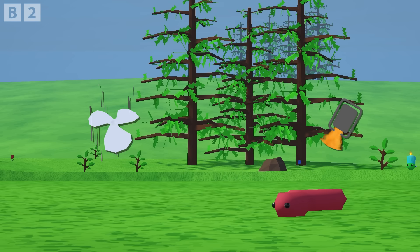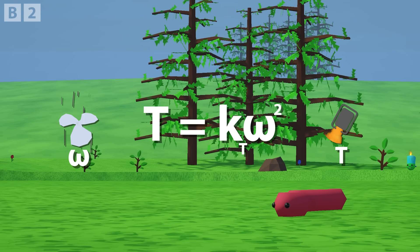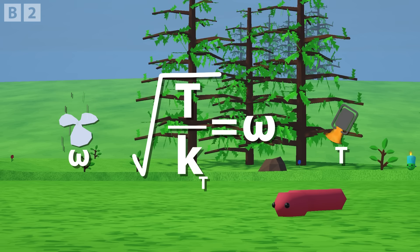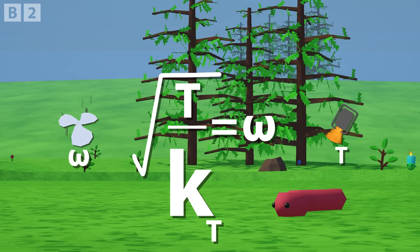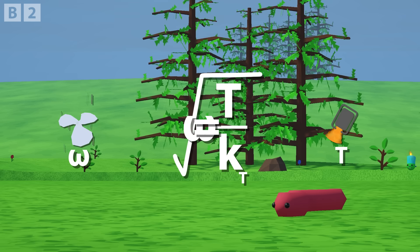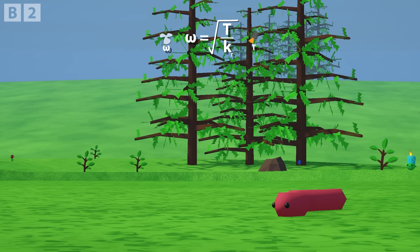Propeller speed converts to thrust through this equation — it's a quadratic relationship. And this term K here isn't really a scientific thing; it's just a number to represent how efficient our propeller is at moving the air.